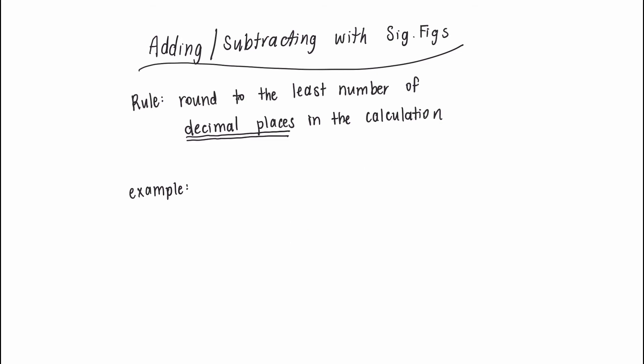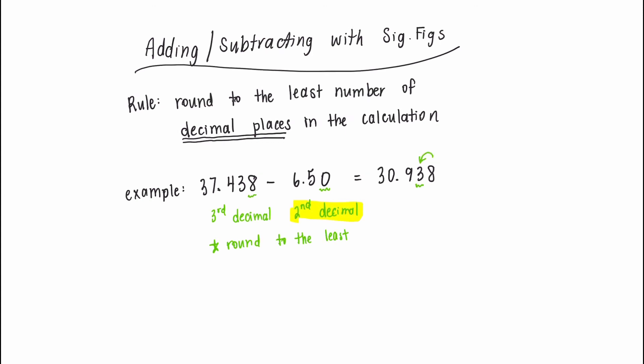Now let's look at an example where we're subtracting two numbers. Let's start with 37.438 minus 6.50, which should give us 30.938. Then we have to go to each of our starting values and look at how many decimal places there are. We have one reported to the third decimal and one reported to the second decimal, and we need to round to the least number of decimal places, which will be the second decimal place. Now let's go to our answer and round to the second decimal place. This will give us a final answer of 30.94.